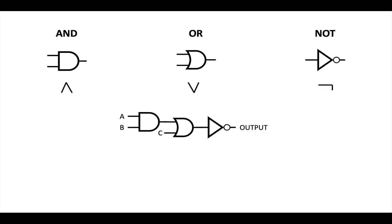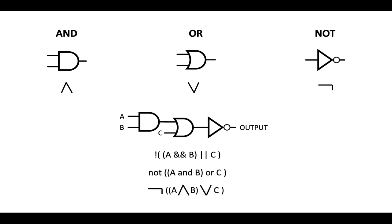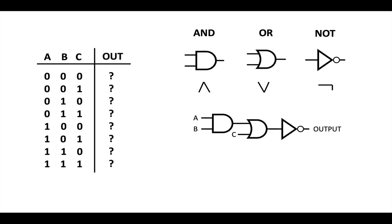What we can do is take these individual gates and chain them together in a more complex logical circuit. The expression of this logical circuit is this equation here, which looks like this in Python, or like this if you write it out in mathematical terms. Since there are three inputs to this logic circuit — A, B, and C — we have two states per input, giving us two to the third, or eight possible states.